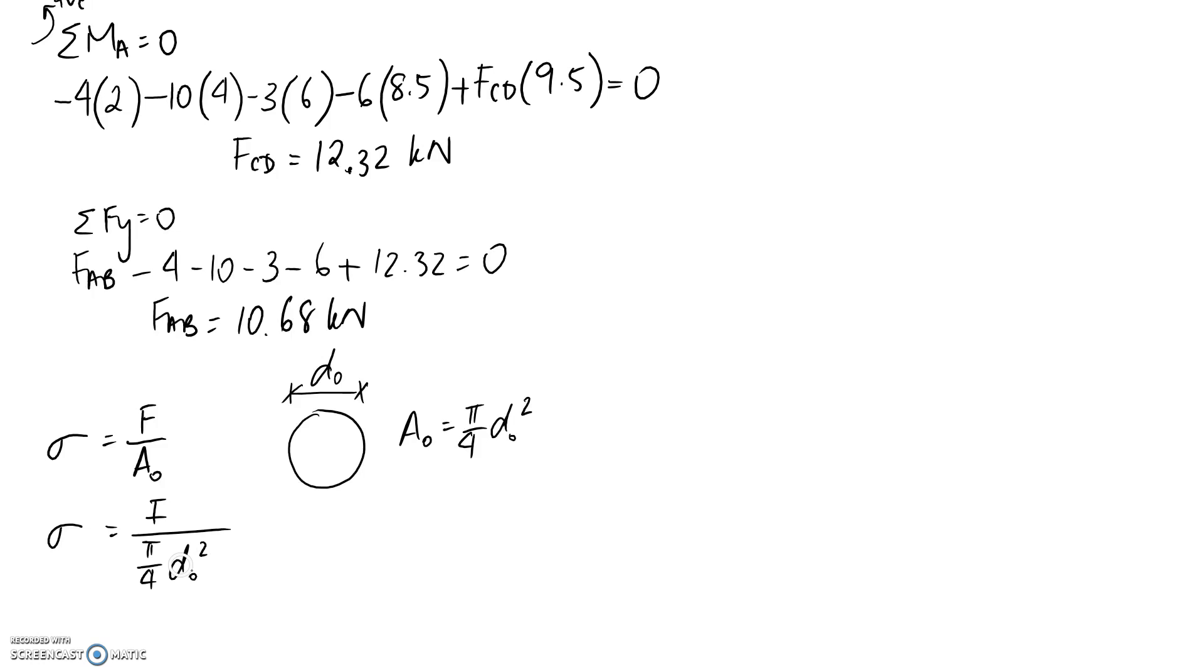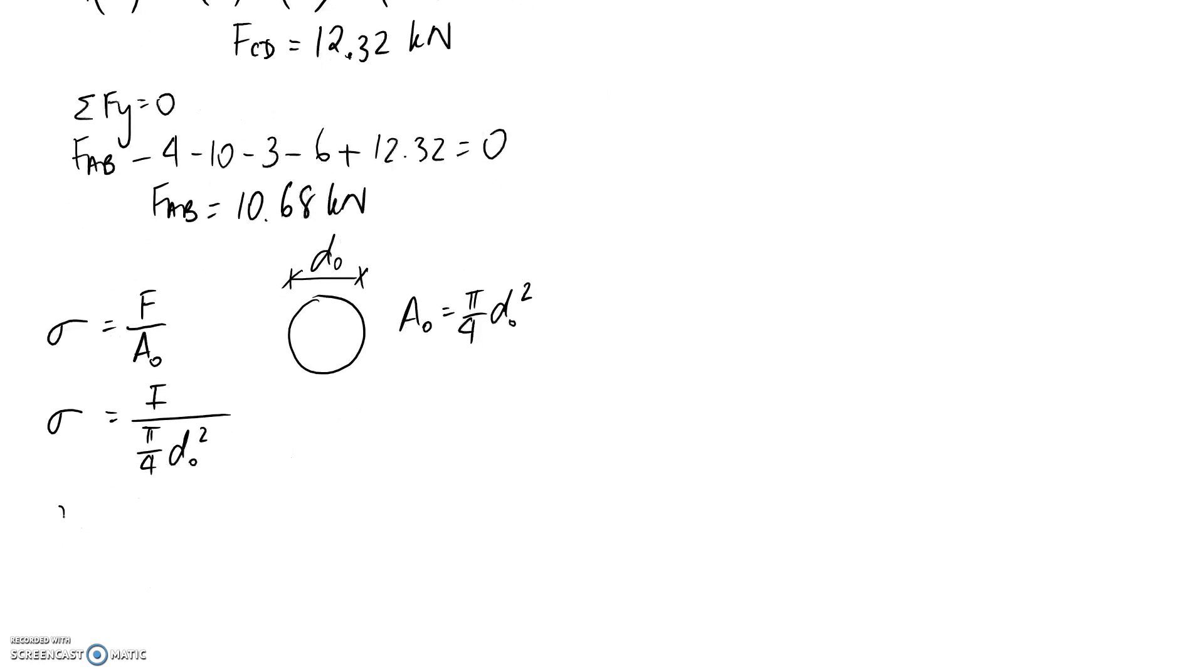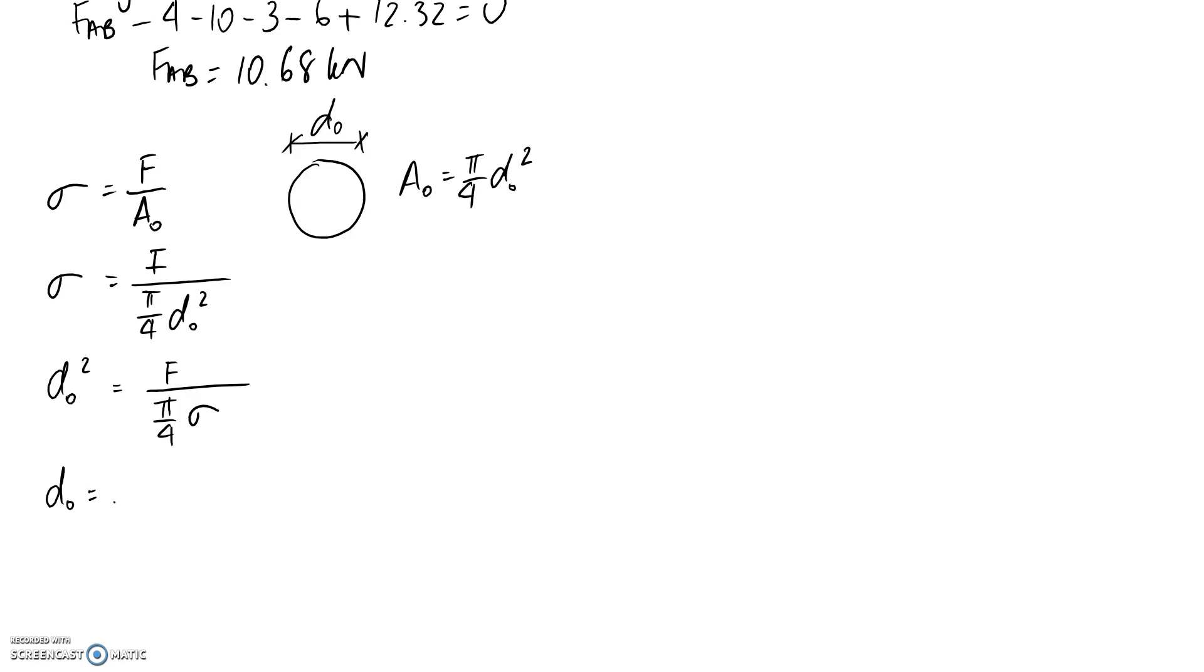Now we want to rearrange for d. I'm going to multiply d² up to the top line, so it becomes d0². At the same time I'll divide sigma down to the bottom. To get d on its own, we take the square root: d = sqrt(F / (π/4 × σ)). This equation relates together the force applied onto the member, the stress, and the diameter we're looking for. We can use this on both our different members.